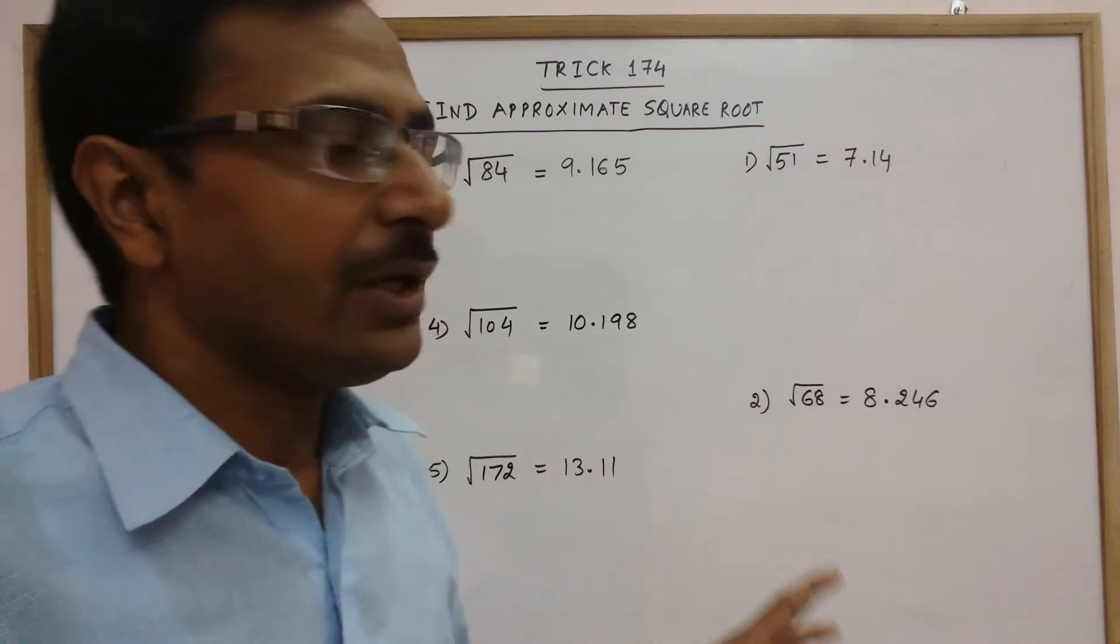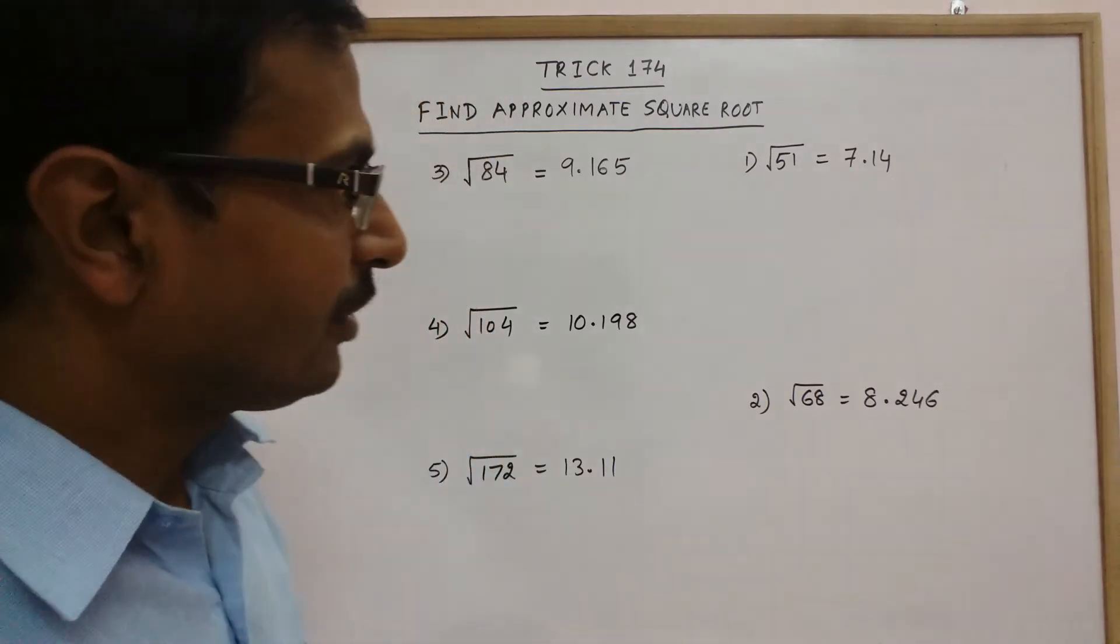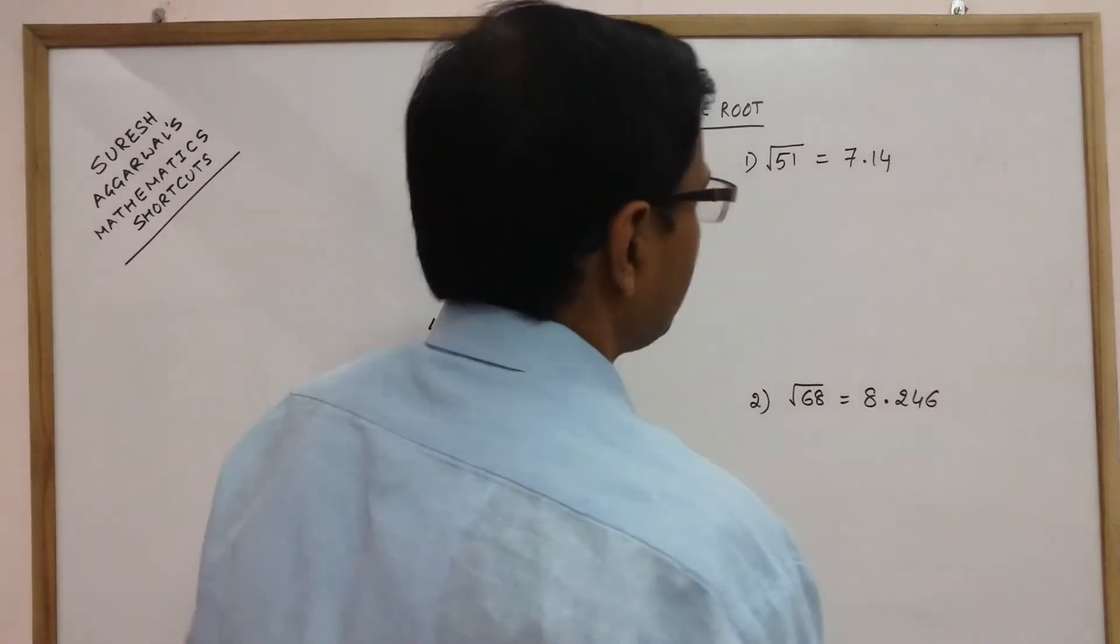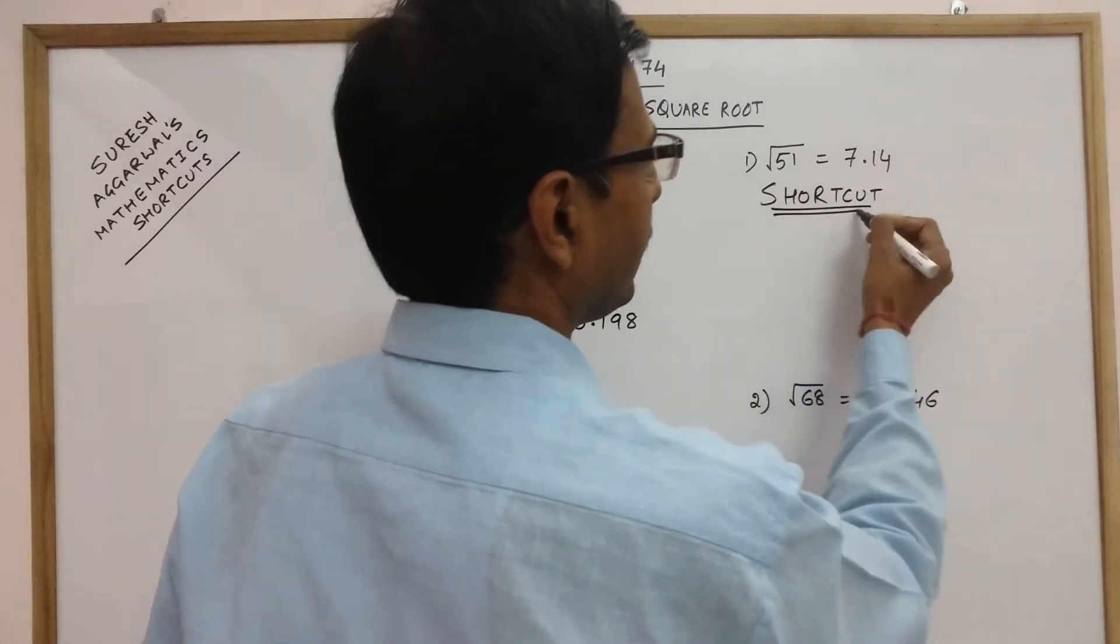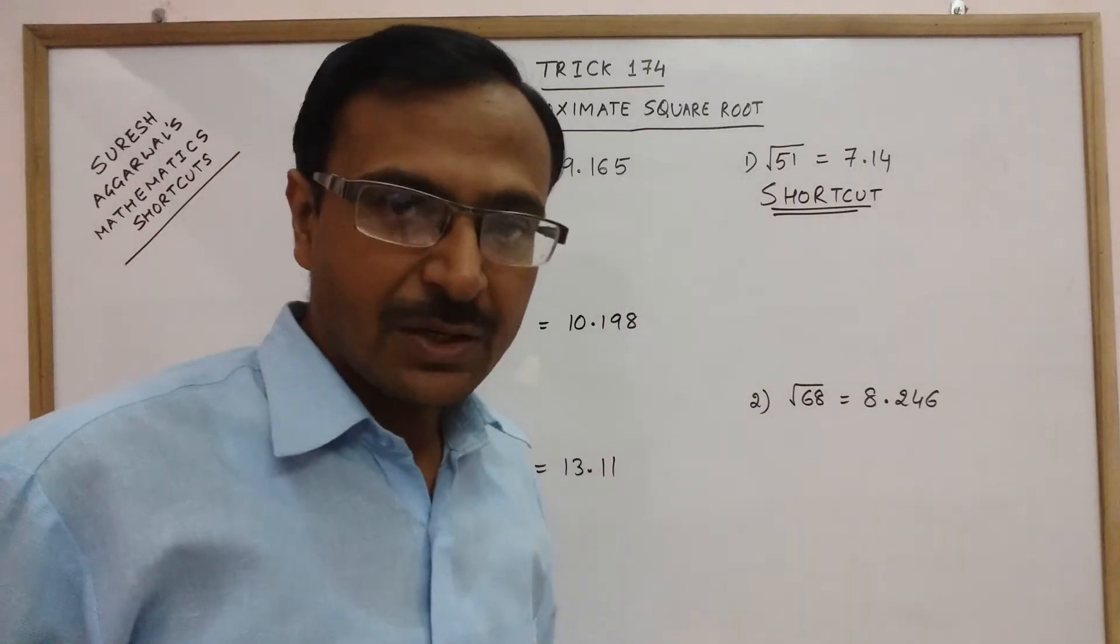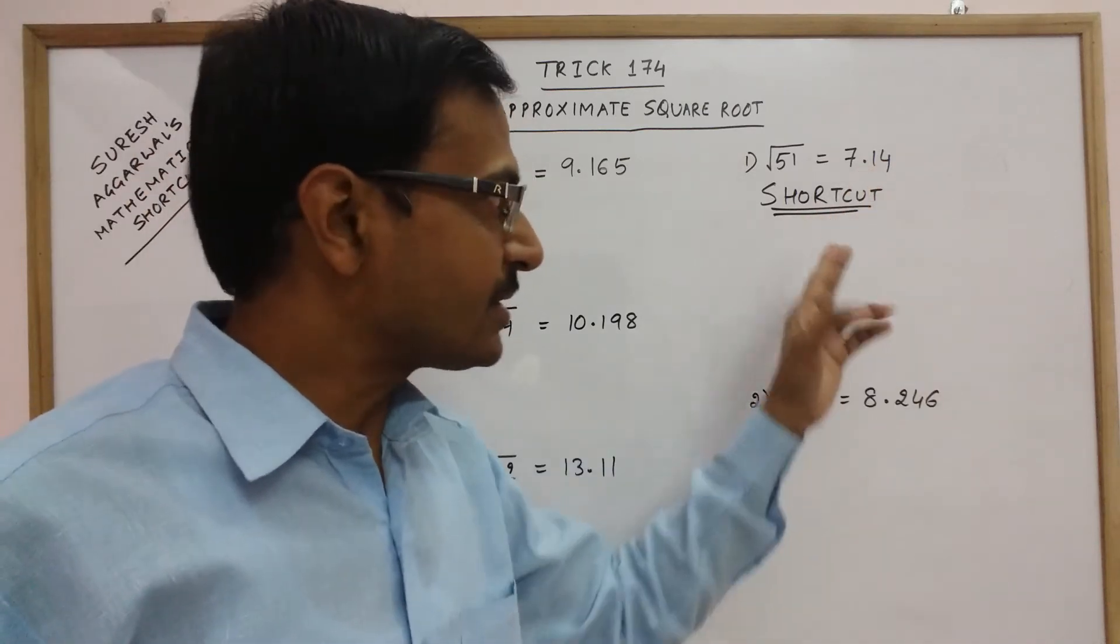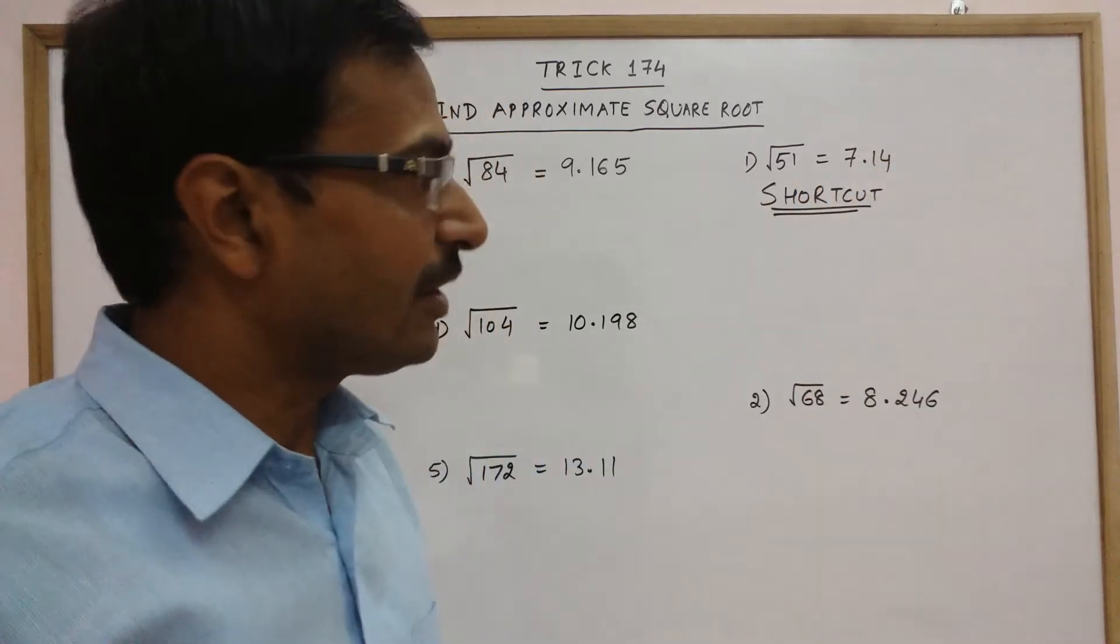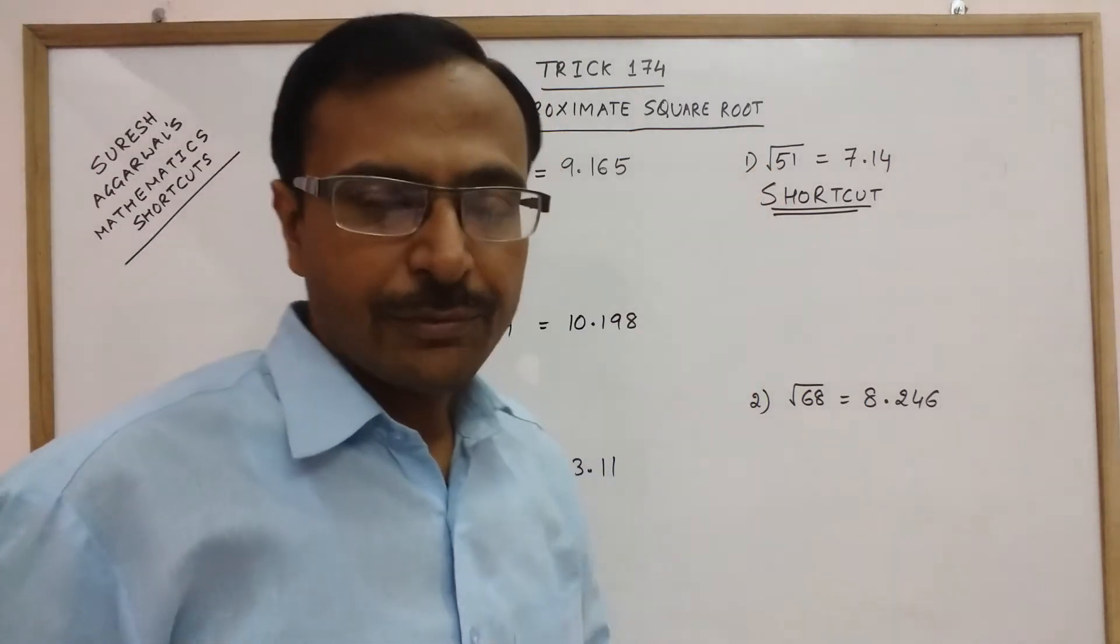We need to do it through a method other than the long division method wherein we make pairs and then carry on with the procedure. Now in this method, the shortcut to find the square root of 51. We will try and obtain the square root of 51 by some other method and mind you, this method will give you an approximate value of the square root. This is the exact value and our answer through shortcut will be very near to this value which will not make any significant difference in the answers.